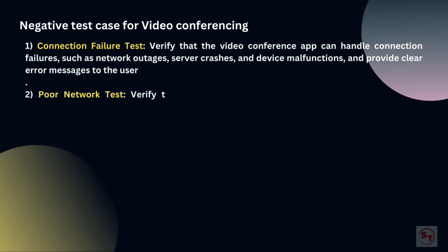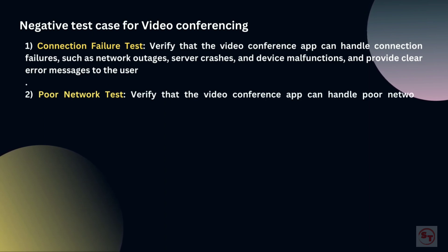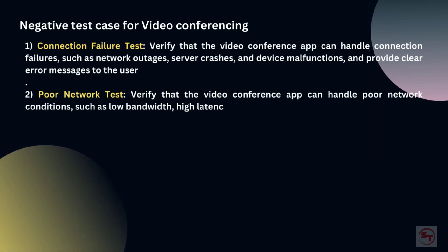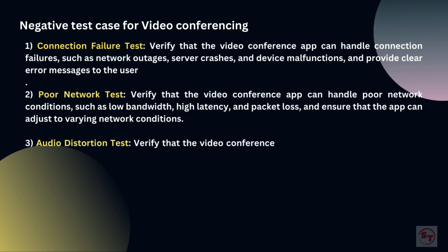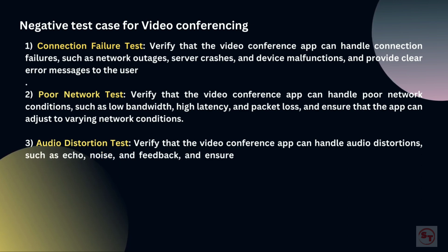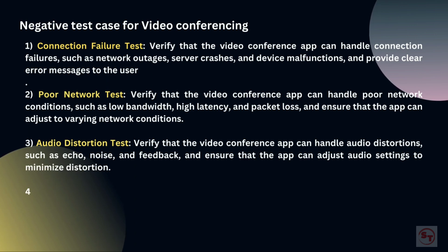2. Poor network test: Verify that the video conference app can handle poor network conditions, such as low bandwidth, high latency, and packet loss, and ensure that the app can adjust audio settings to minimize distortion. 3. Audio distortion test: Verify that the video conference app can handle audio distortions, such as echo, noise, and feedback, and ensure that the app can adjust audio settings to minimize distortion.